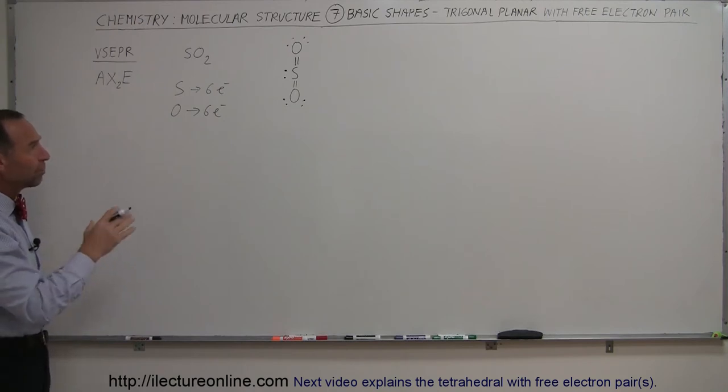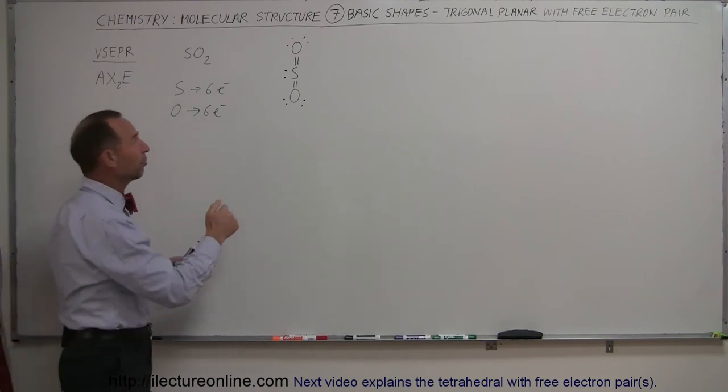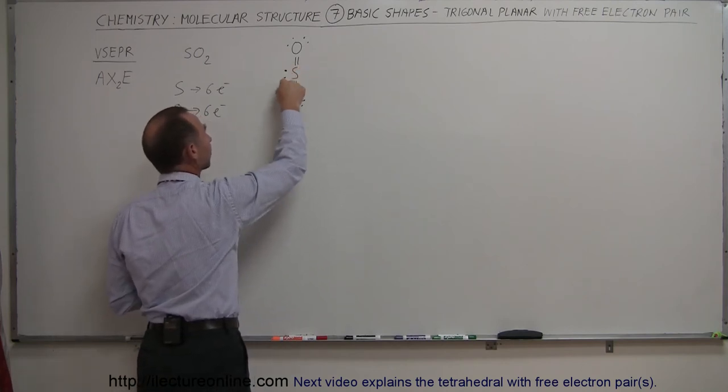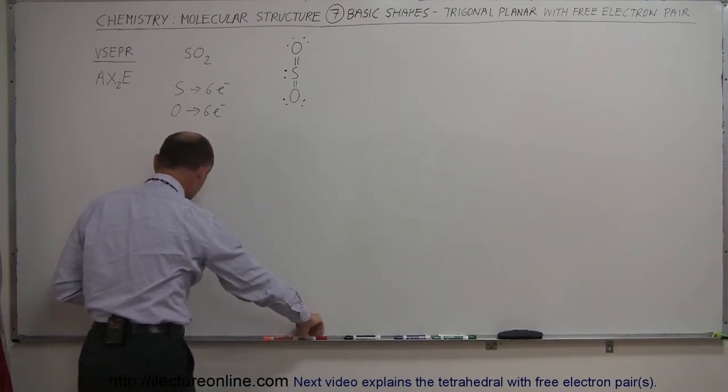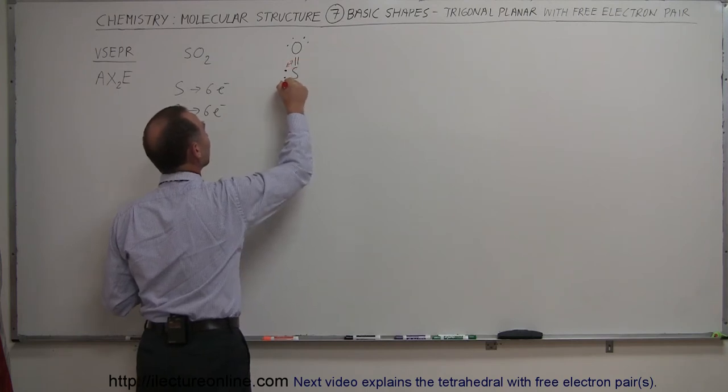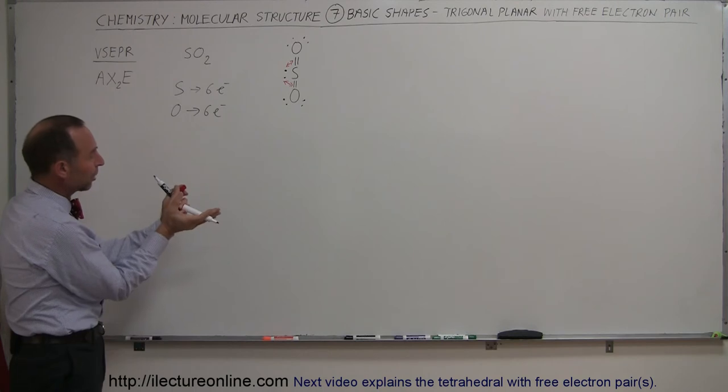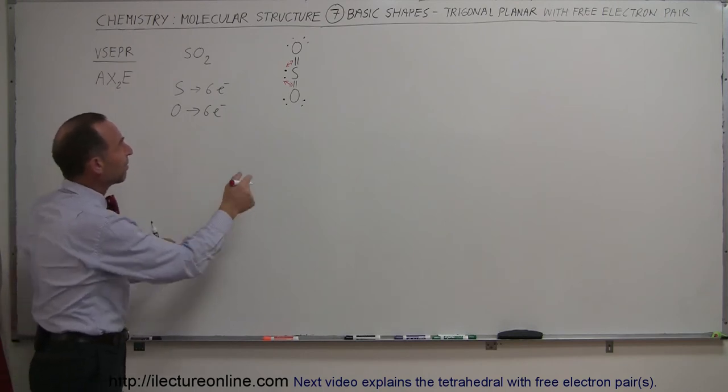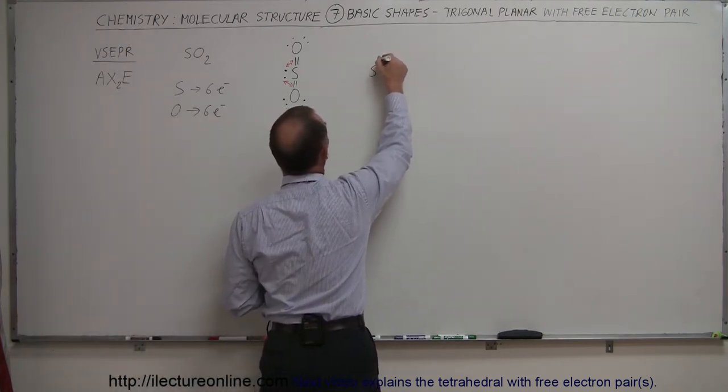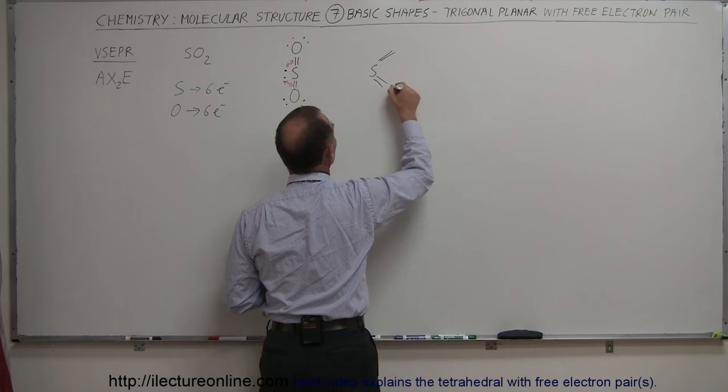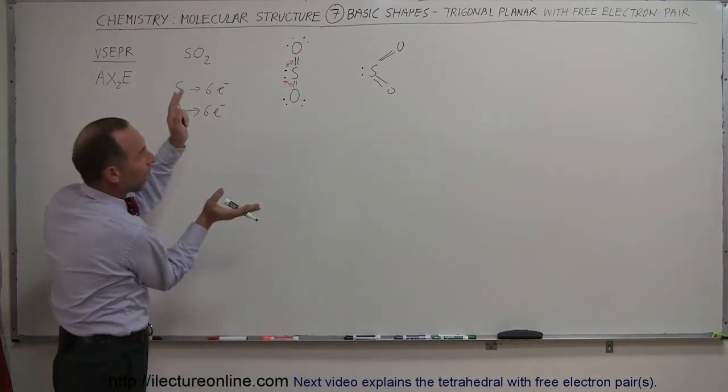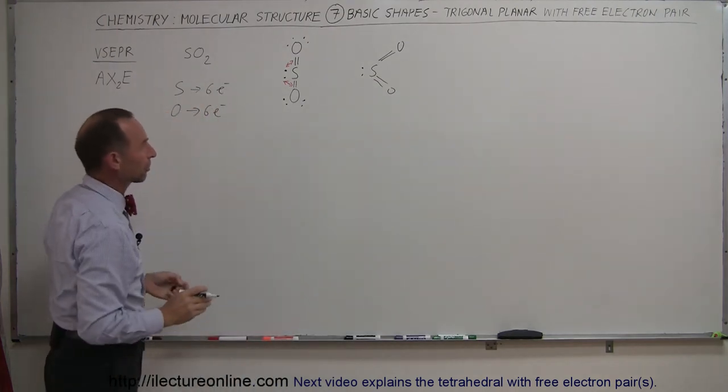Now, the reason why the shape will now be determined by that is because there's repulsive forces between the electrons that are tied up in the bonds, and the free electrons right here. So there's going to be a repulsive force between them. Let me grab my red pen here. So these are going to be pushing against each other. Those are going to be pushing against each other because of the repulsive force, and the molecule will bend away from where the free electron pair is. So you'll end up with something that looks like this. A sulfur with two oxygens this way, two oxygens this way, and then the free electron pair there.